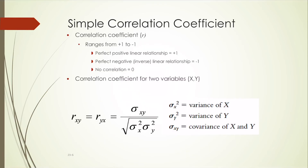A simple correlation ranges from positive 1 to negative 1. The correlation coefficient for two variables x and y equals the covariance of x and y divided by the square root of the variance of x multiplied by the variance of y. This can help you determine what relationships you'll encounter as you do research on various aspects of your business.